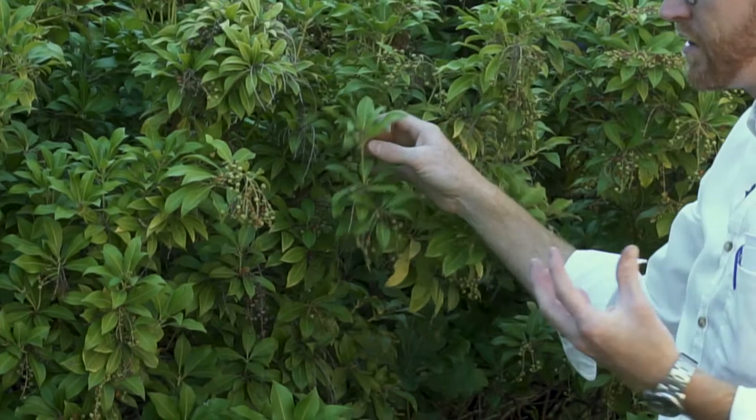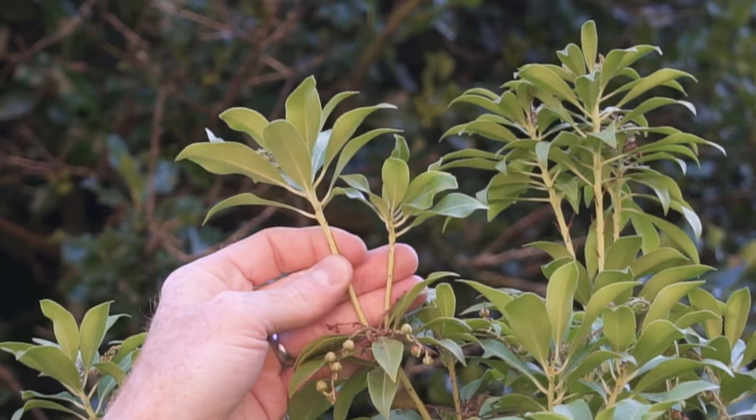So there's leaves being crowded out towards the tips, and they actually have an appearance of being whorled. So they sometimes can give the impression that there are multiple leaves per node, when in fact these are actually alternately arranged.